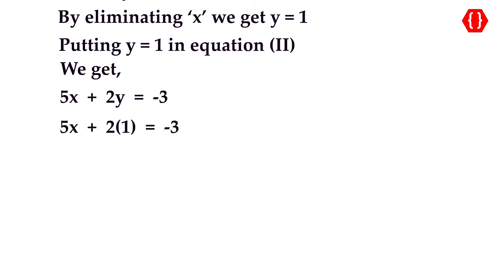5x + 2 = -3. 5x = -3 - 2. 5x = -5 and hence the answer we get is x = -1.